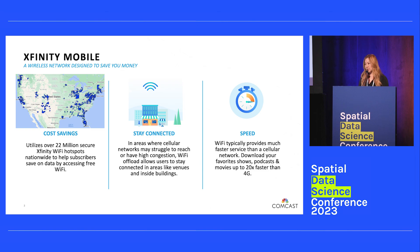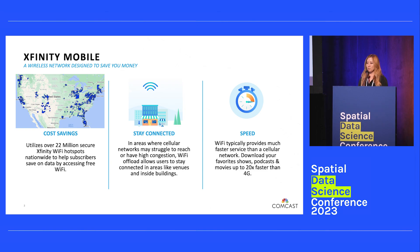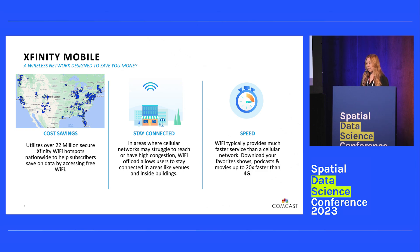XM has a few benefits that help differentiate us from Verizon as well as other network operators. The first is cost savings. The XM network utilizes over 22 million hotspots nationwide to help subscribers save on data by accessing free Wi-Fi. Let's say a typical mobile user uses 20 gigabytes of data a month. As an XM subscriber, if I was able to offload 5 gigabytes onto Xfinity Wi-Fi hotspots, I'd be charged only 15 gigabytes, allowing us to offer discounted rates.